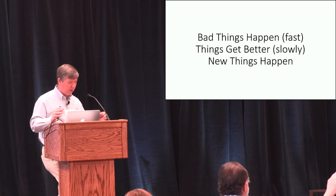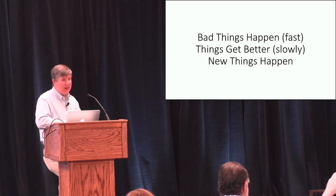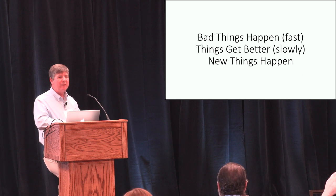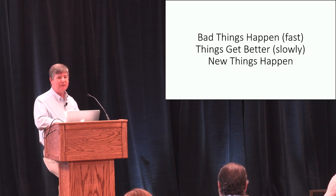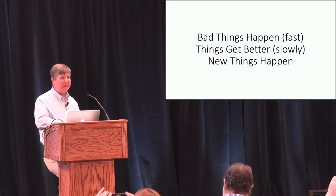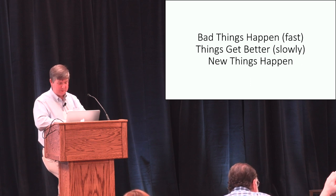The short form of this talk is: bad things happen fast, things get better slowly, and new things happen. The thing I want to come back to at the end is the issue of when new things happen, because the assumption for decades has been that new things happen as a result of things getting better. I want to suggest that we have at least some data that new things are actually happening before or during the bad things — which might seem counter-intuitive, but that's the way the world is.